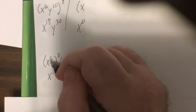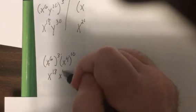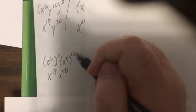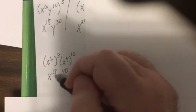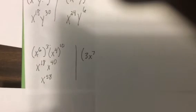So it would be X to the eighteenth. When you take a base raised to a power, raised to another power, you multiply. This is X to the fortieth. Now when you multiply two things in the same base, you add. So it's X to the fifty-eighth.